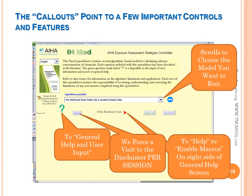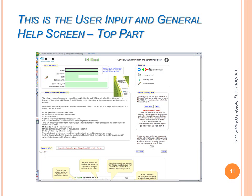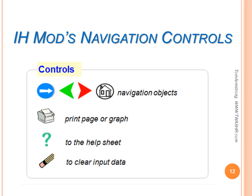This control scrolls to the model that you choose to run. This is the user input and general help screen that you would get to using the green question mark on the opening screen. Note there are information fields here to record the description of the scenario you're modeling, a discussion of the general model parameters, and some more information below that you can scroll to. IHMOD has navigation controls built into it: a forward to the model, a back to the model, a go to help, a go home to the home screen, and a choice of printing either the whole page or just the graphical output from the model — including printing a page or graph to the help sheet for the specific model — and a button to clear the input data.